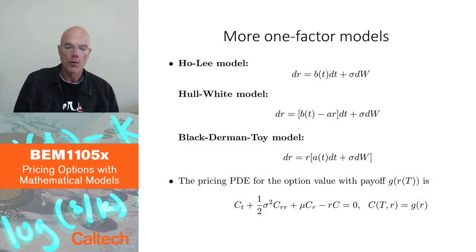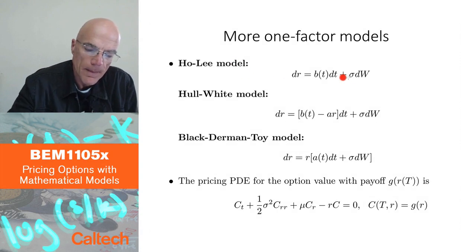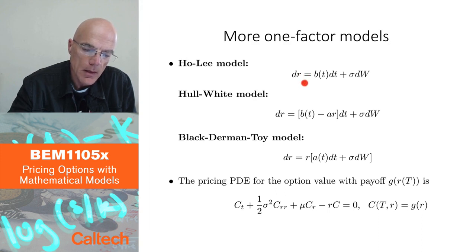Here are more one-factor models. The Ho-Lee model looks simple. I think they first introduced it in a discrete time version, but this would be the continuous time version of the same model.